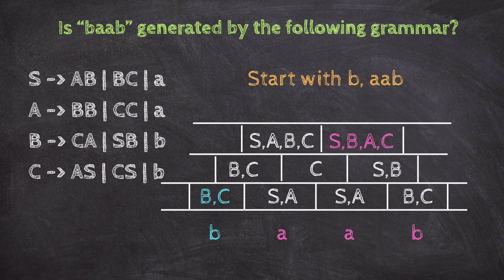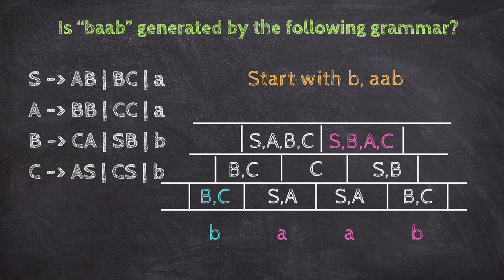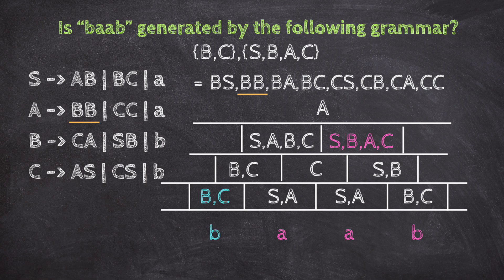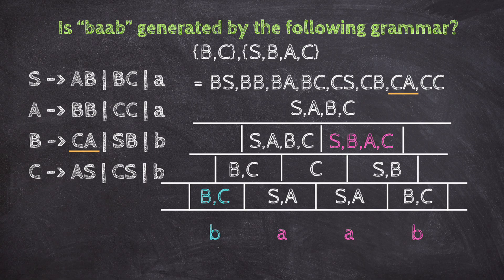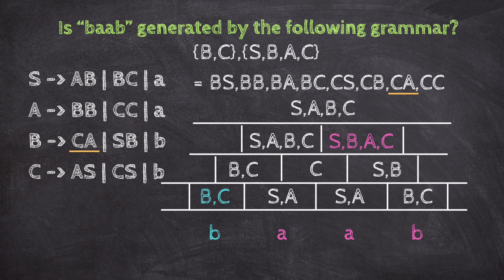Now for the final row, the whole string BAAB. We split as B and AAB. B, C from B, and S, A, B, C from AAB. Combinations are BS, BB, BA, BC, CS, CB, CA, CC. From the grammar, A goes to BB, S goes to BC, C goes to CS, B goes to CA. So above BAAB, we write S, A, B, C. We already wrote all non-terminals, so it's fine to stop, but I keep going for explanation.